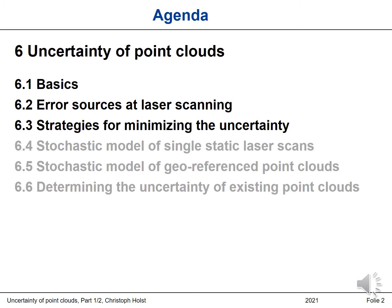We will talk about different topics within this chapter. First, I want to start with the basics of uncertainty of the point cloud. Then in section 6.2, I will go on with the error sources at laser scanning, focusing on laser scanners. I will start with terrestrial laser scanners — a static laser scanning procedure — and then extend to georeferencing, which differs between static and mobile laser scanning. In section 6.3, I want to talk about strategies for minimizing the uncertainty. After learning about the influencing factors in section 6.2, we will discuss how their effects in the point cloud can be minimized. This will be the lecture of today.